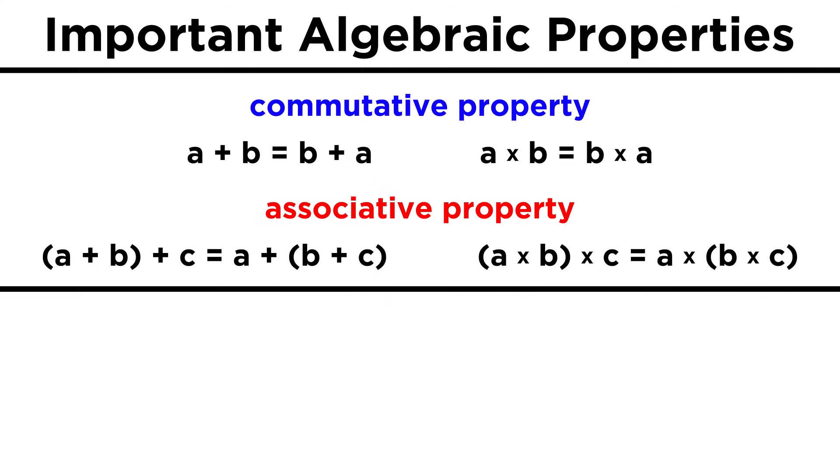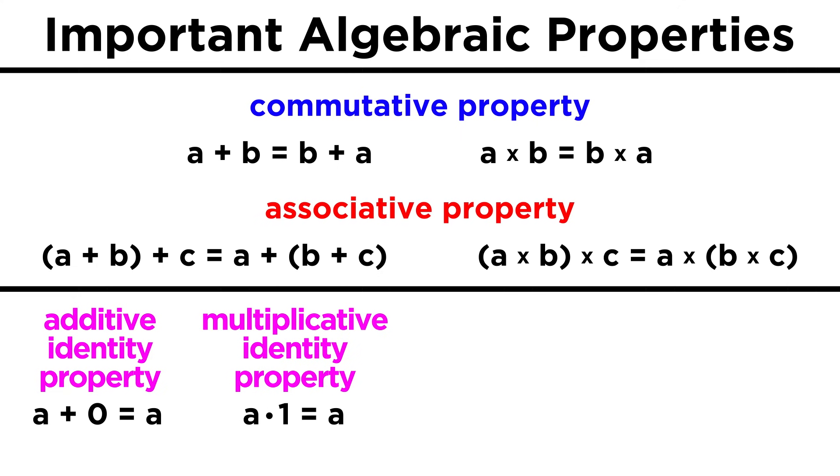To be thorough, let's also mention some pretty intuitive properties, like the additive identity property. This says that you can add or subtract zero to any number or algebraic term, and it will retain its identity. Five plus zero is five. Three x minus zero is three x. Seems obvious, but it will come in handy. The multiplicative identity property works the same way, except with the number one instead of zero. Any number or algebraic term times one will give you the same term again. Four x times one is four x.